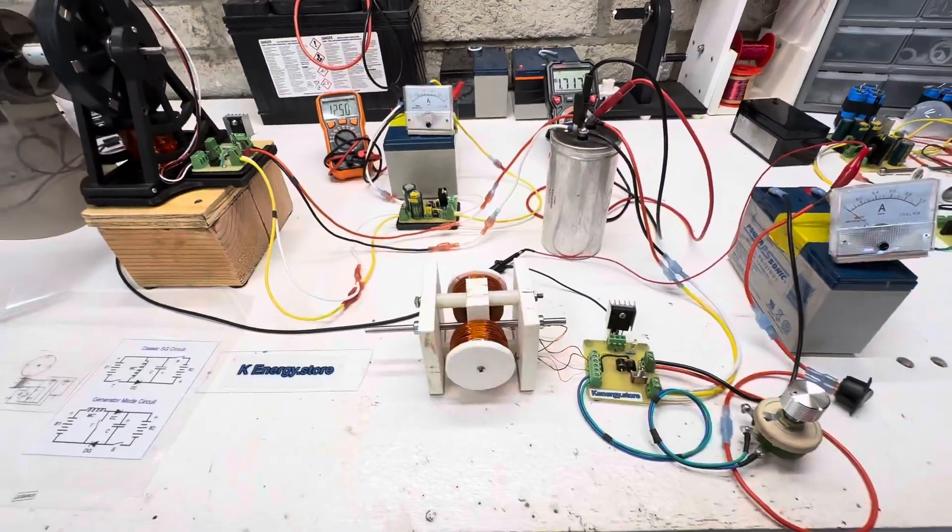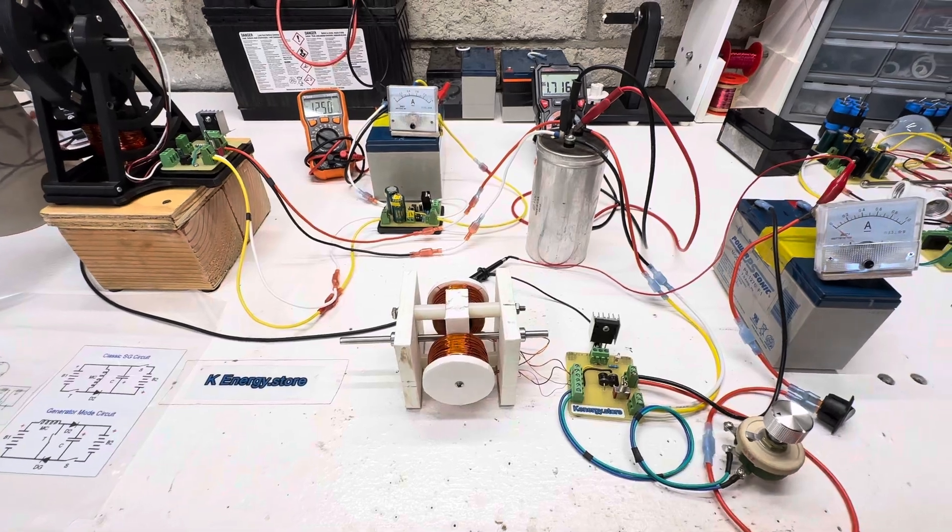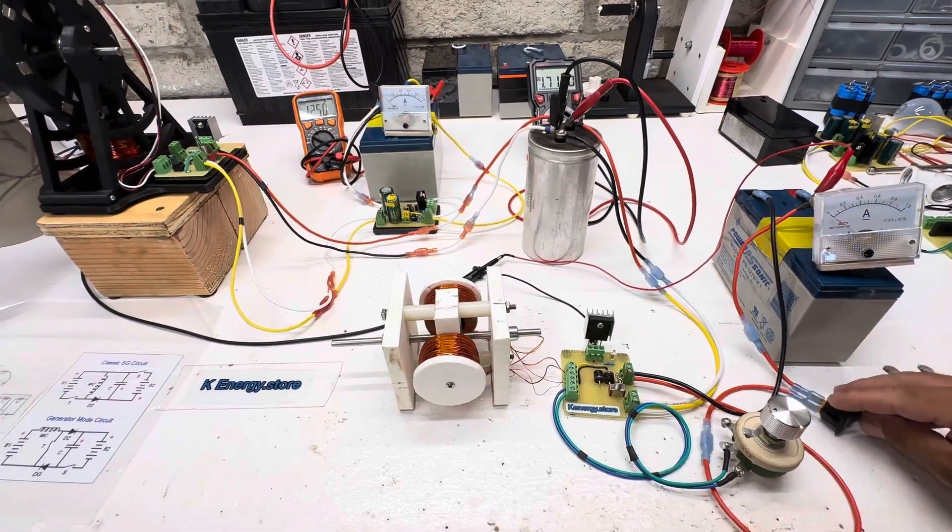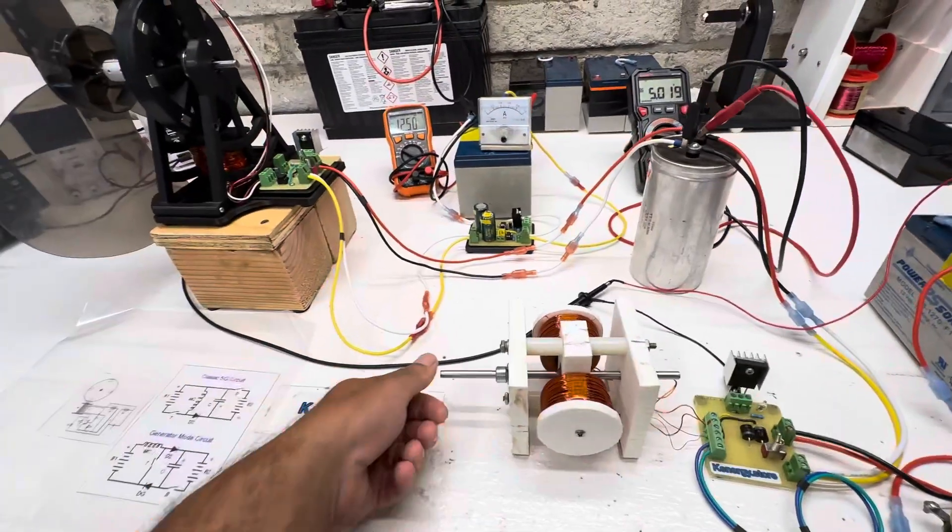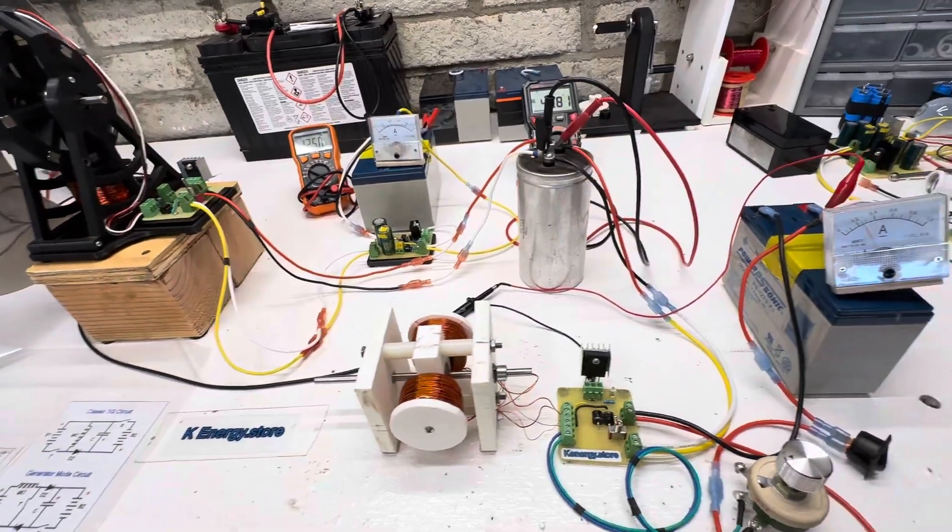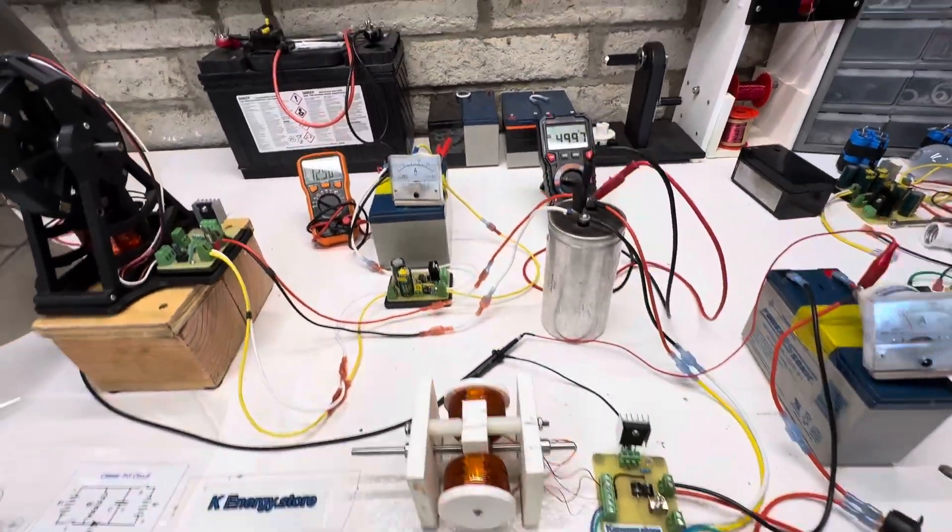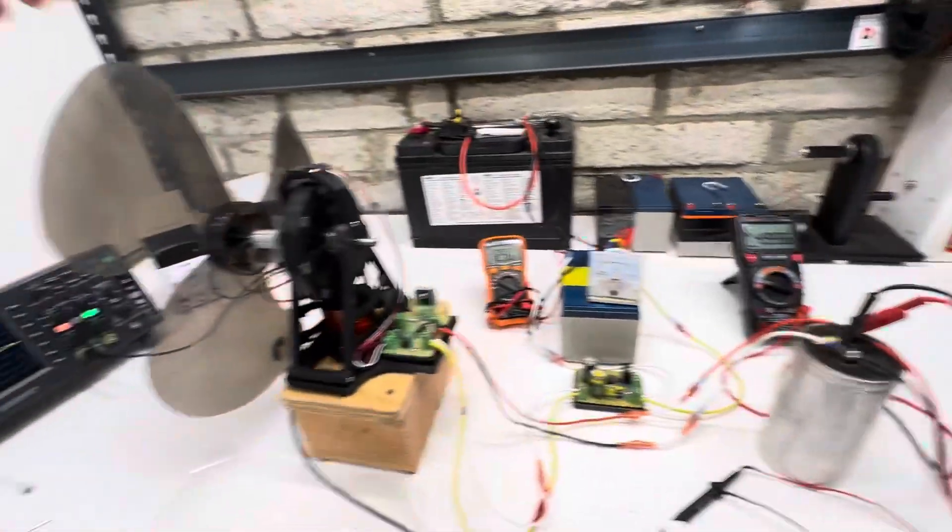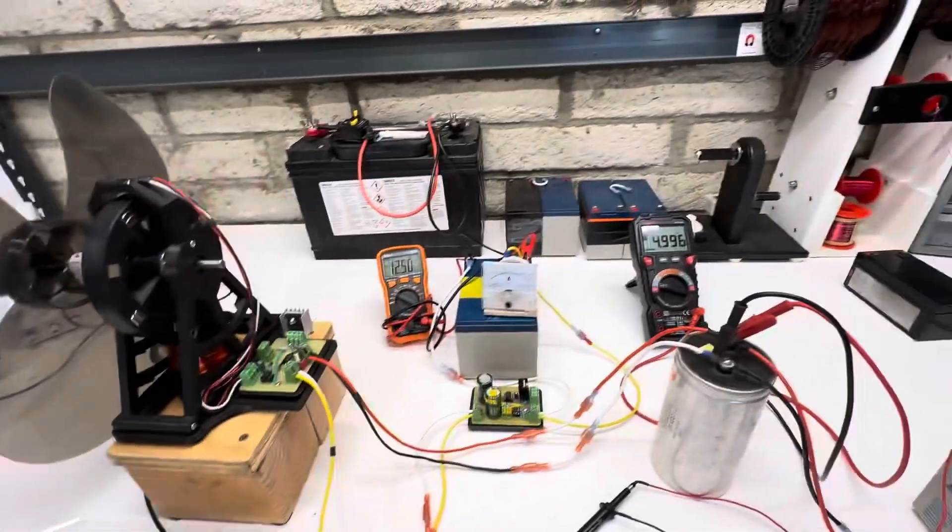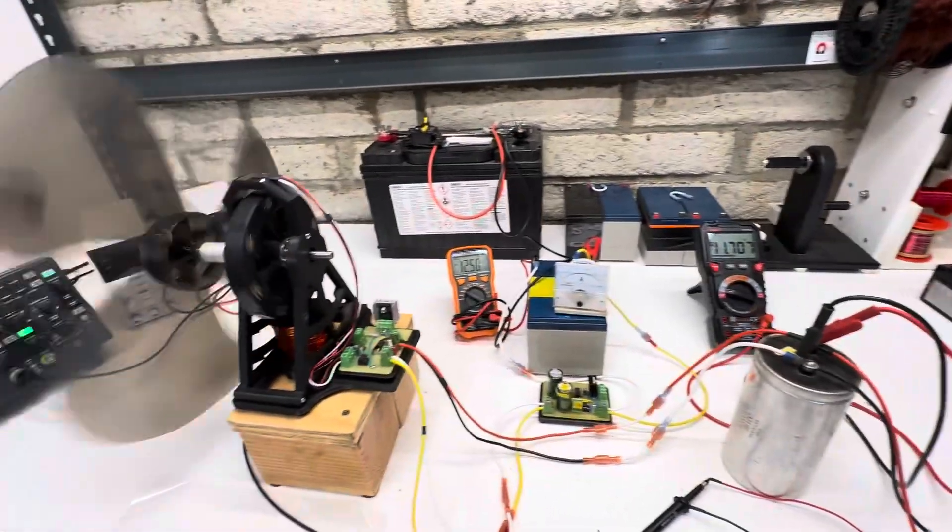So what we're going to do is we're going to start off in SG mode, so the motor is going to go quite quick, so let's get this kicked over. So this is SG mode and you can see the capacitor is kind of sitting there, so we'll just get that there we go and we'll turn this one.